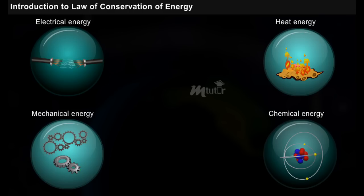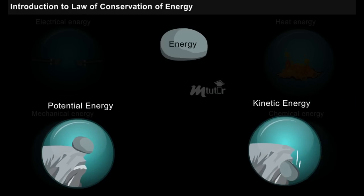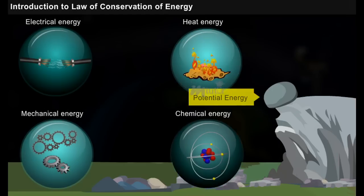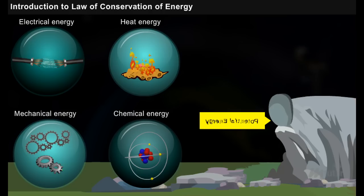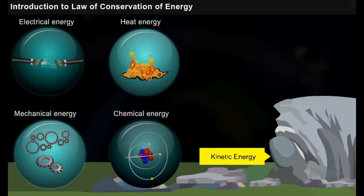Moving further, another important classification of energies is potential and kinetic energy. Say a rock at some elevation possesses some potential energy. A part of this potential energy is converted into kinetic energy when it falls down.